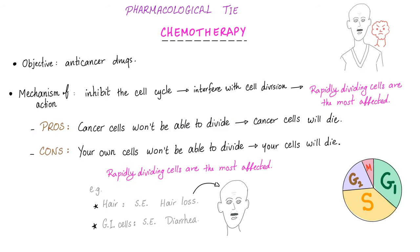I'm not concerned with theories. I'm actually more concerned with flesh and blood patients. So, let's actually take it clinical. Let's talk about pharmacology, baby chemotherapy. What is the objective? They are anti-cancer drugs. Okay. What's the mechanism of action? They inhibit the cell cycle. So, they interfere with cell division. It's not going to happen. Therefore, rapidly dividing cells are the one most affected.